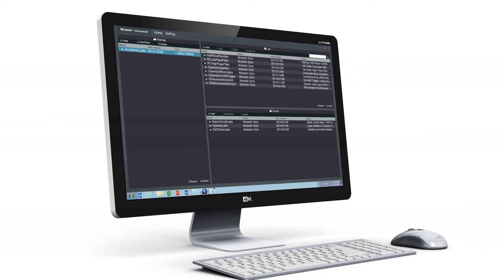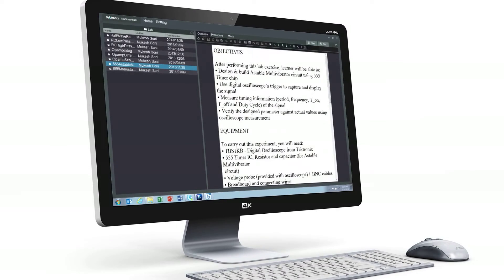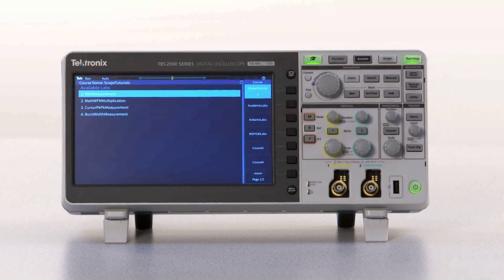The second element is a Windows-based courseware editor that lets you edit lab exercises and download them into the TBS 2000. The third element is the scope itself.